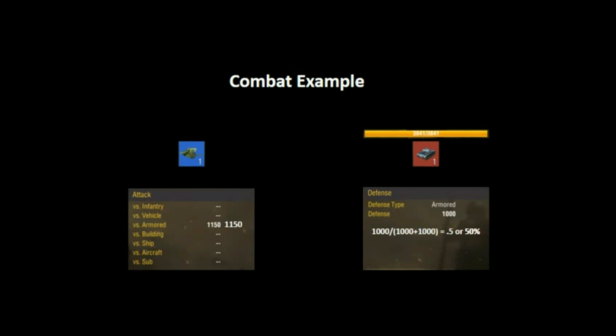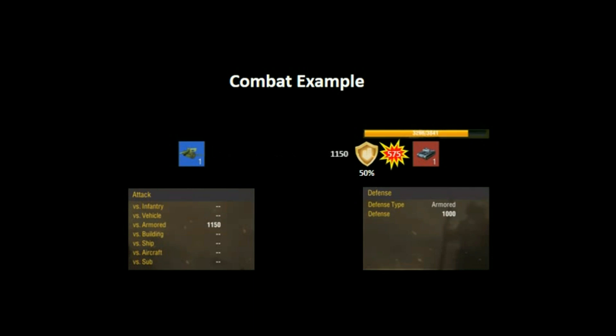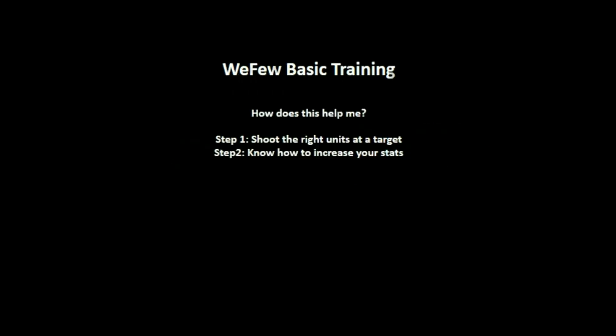Once a minute, the game takes the attack value from the unit and calculates the defense mitigation of the target. At the end of that minute, the attack value is reduced by the defense mitigation value, and that number gets applied to the defender's hit points. In this case, after one minute of combat, the 1150 attack value results in 575 points of damage applied to the defender's hit points.